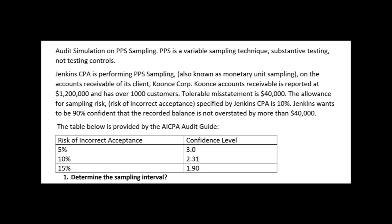Jenkins CPA's tolerable misstatement is $40,000, meaning Jenkins can tolerate accounts receivable being overstated by $40,000 but not more. Whenever you perform PPS sampling, you need to know the tolerable amount of misstatement — how much error the auditor could tolerate and still be okay with the account balance being fairly presented. The allowance for sampling risk, called the risk of incorrect acceptance, specified by the auditor is 10%. That means they're taking a 10% risk of incorrectly accepting the accounts receivable balance as fairly presented when it isn't.